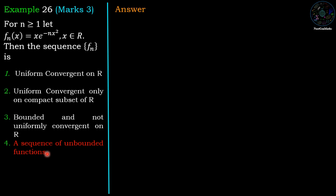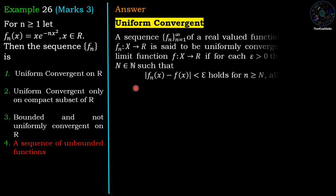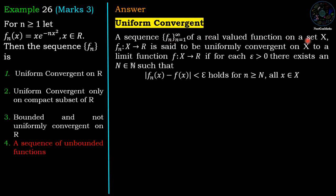Now we check uniform convergence. A sequence f_n of real-valued functions on a set X is said to be uniformly convergent on X to a limit function f defined from X to ℝ, if for each ε > 0 there exists a natural number N such that |f_n(x) - f(x)| < ε for all n > N and all x belongs to X. The key point is that N depends on ε but not on x, because this must hold for all x.